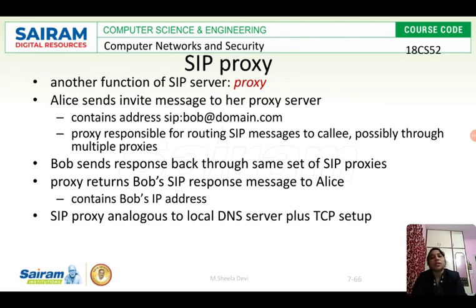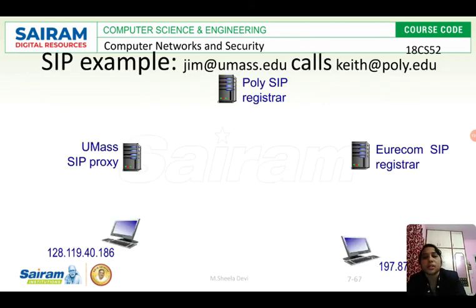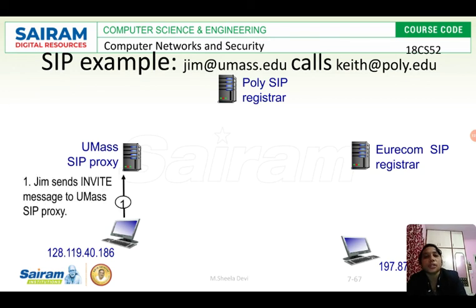How does the proxy know Bob's IP address? It looks it up in the registrar server, which stores a mapping of domain name (email address) to IP address. Using the domain name sent by Alice, the proxy looks up the table to get Bob's IP address, and Bob's registrar server sends it to Alice's proxy server. The SIP proxy is analogous to a local DNS server plus TCP setup.